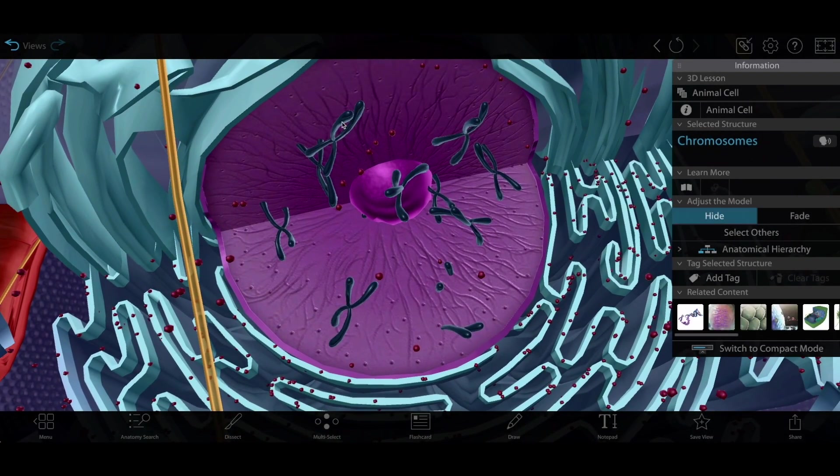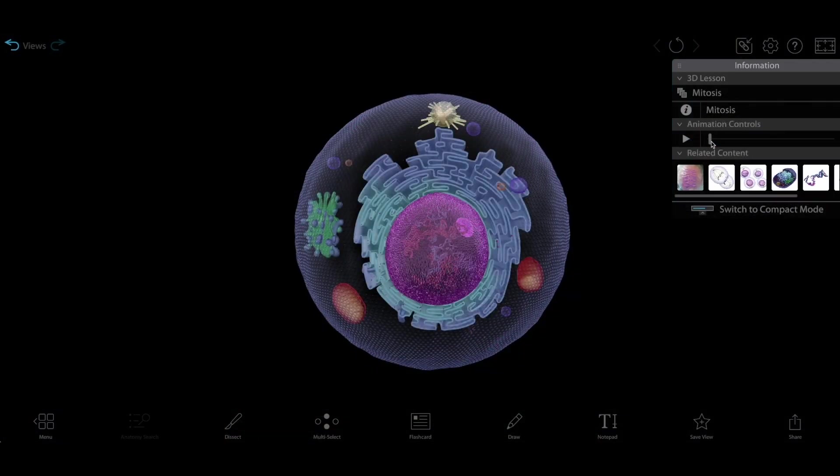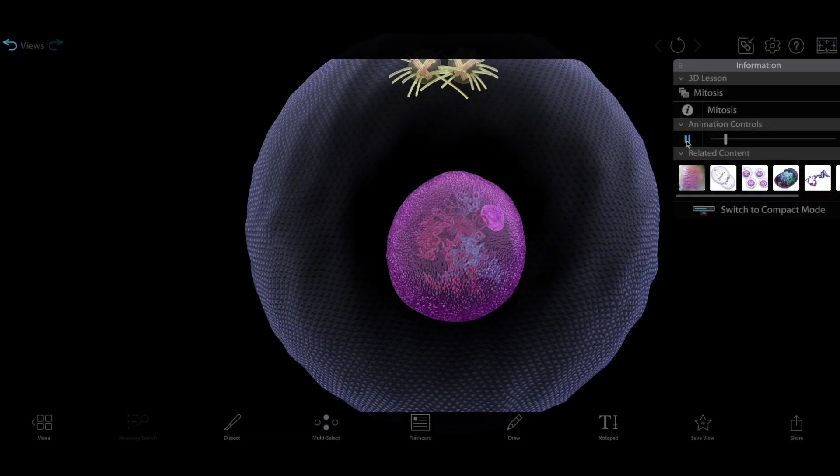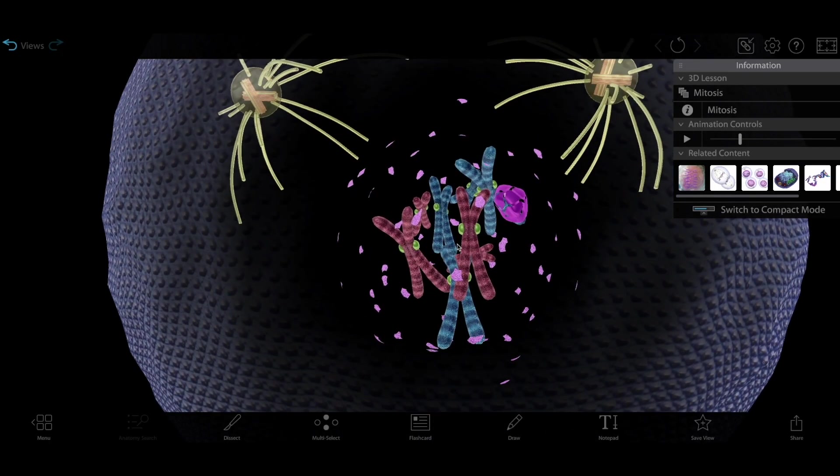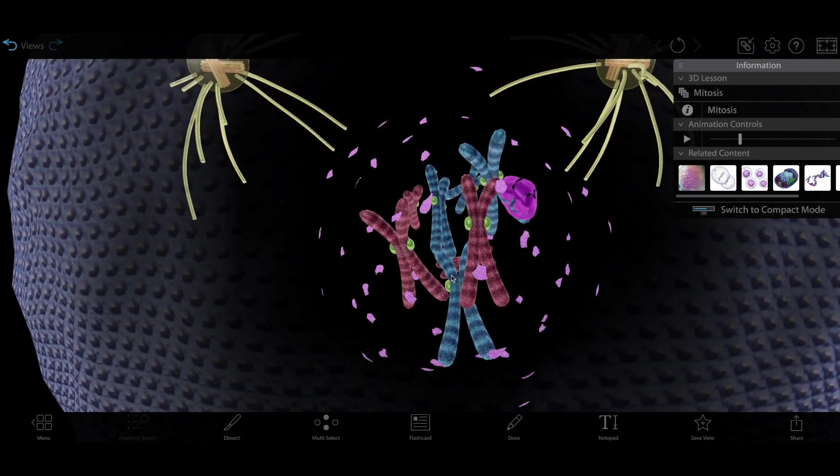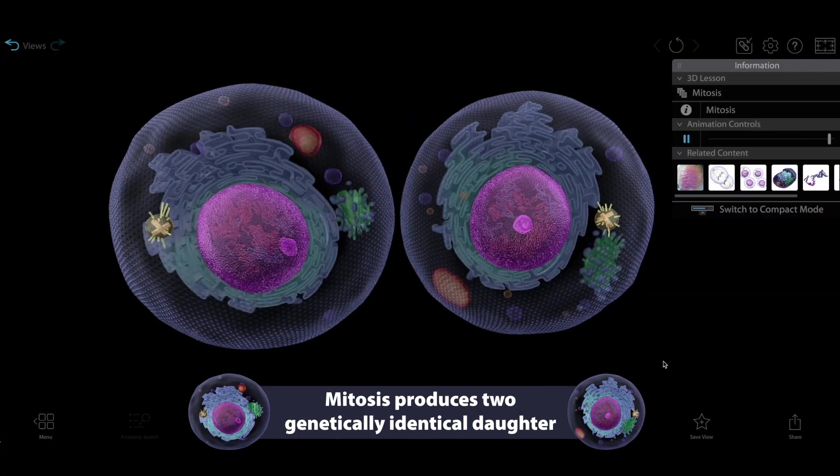If you look at our 3D cell model, then go over to the mitosis simulation, you can see that the cells at the beginning and end of the process look just like this cell. That brings us to another important characteristic of mitosis.